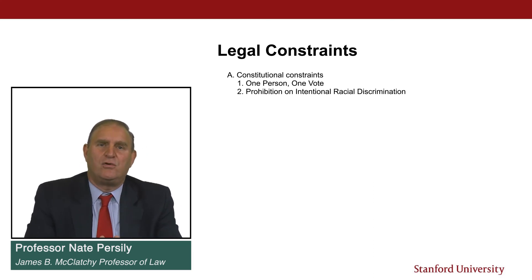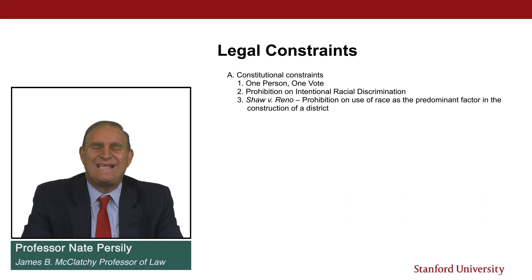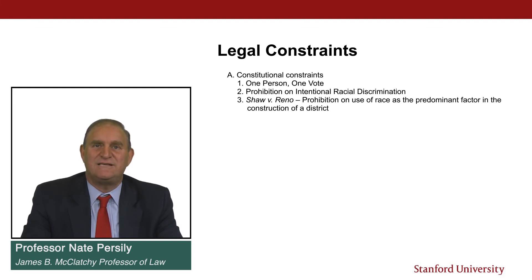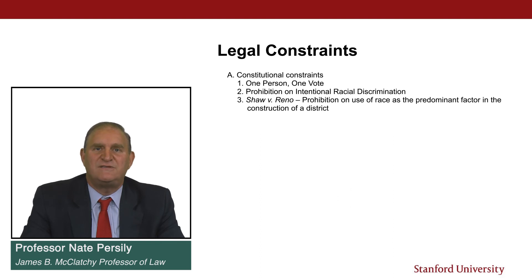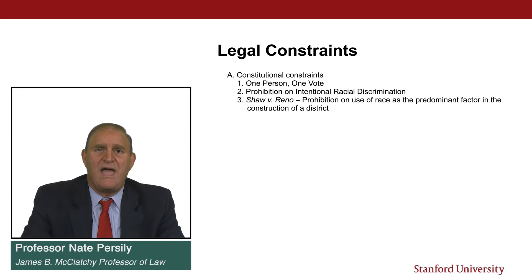The prohibition on intentional racial discrimination is different from the Shaw v. Reno line of cases, which are prohibitions on the excessive use of race in the construction of a district. In the intentional race-based vote dilution cases, the goal is to injure a racial group by minimizing their representation. In the Shaw line of cases, the issue is whether you've allowed race to become too much of a factor in district construction — whether that violates the general rule of colorblindness emanating from the 14th Amendment. If race has become the predominant factor in constructing a district, it may be unconstitutional under the Equal Protection Clause.